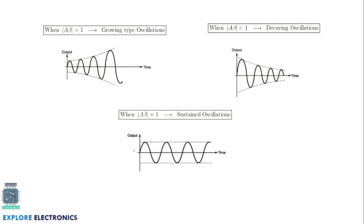What happens if A·β is greater than 1? We get growing-type oscillations — the voltage continuously increases. If A·β is less than 1, the voltage of the signal degrades; this is called decaying-type oscillation. Only if A·β equals exactly 1 do we get a continuous, sustained oscillation.